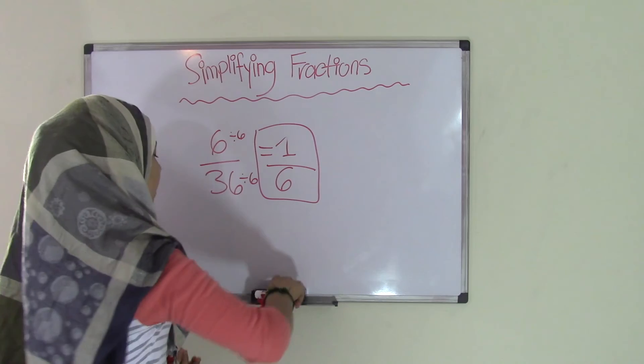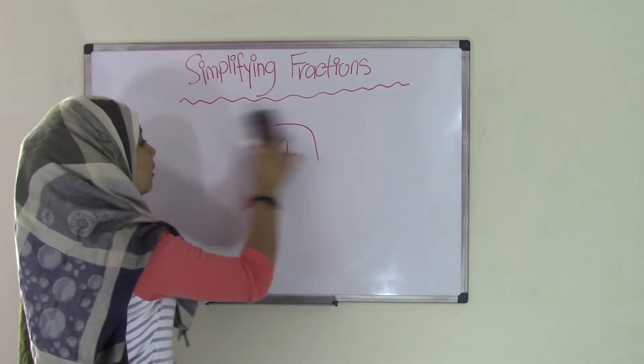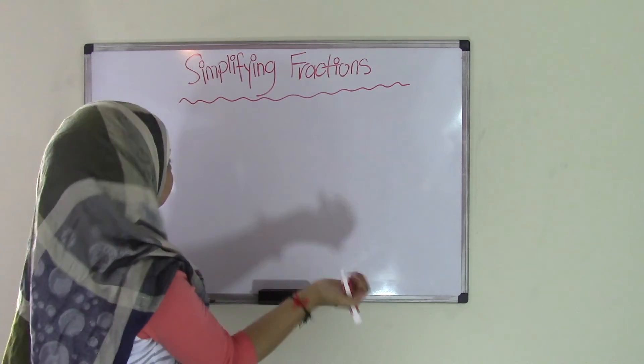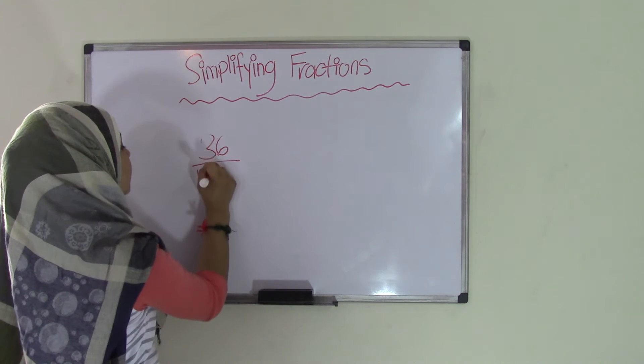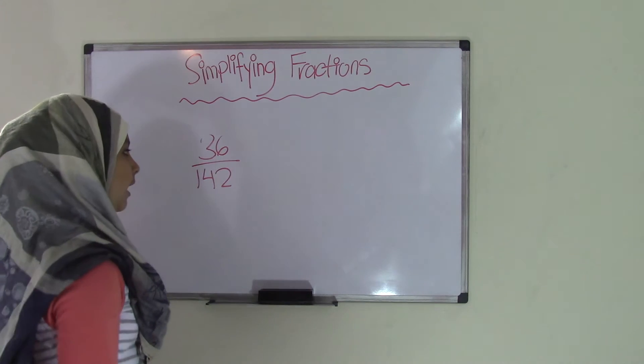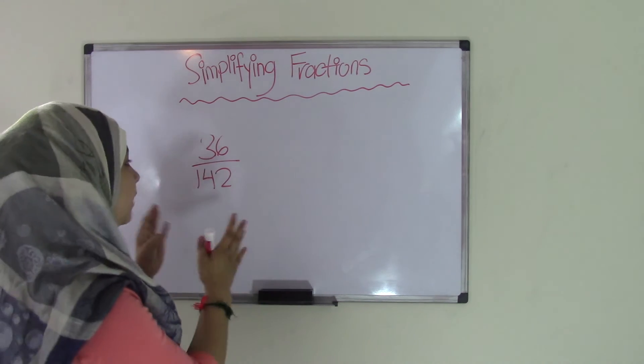So that was really easy, right? How about if we had a larger number like maybe 36 over 142? Okay, that's a pretty good number, right? That's a very big number also.